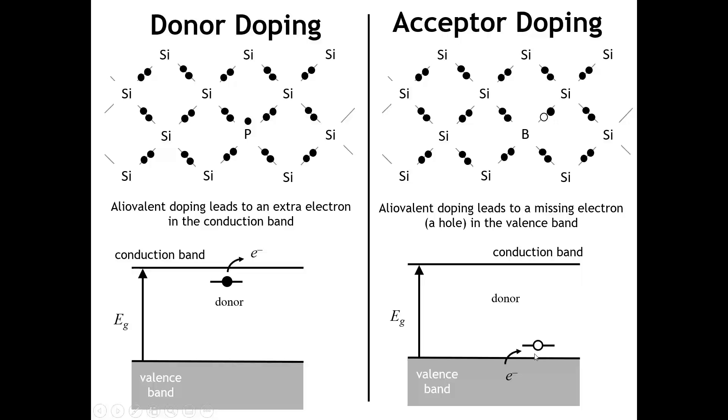Or if we think about in a band theory point of view, we have this state, this empty state, that's quite close to the valence band. So it's easy for an electron to move into that state, let's say get trapped on the boron atom. And if that happens, now the valence band is not completely filled. And so this hole, this missing electron, can move around and carry the charge.